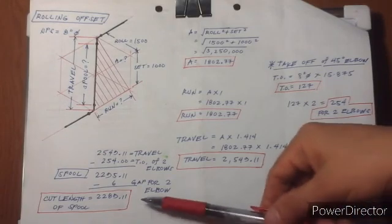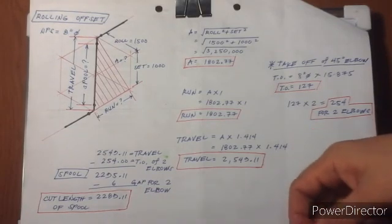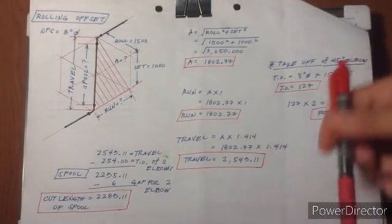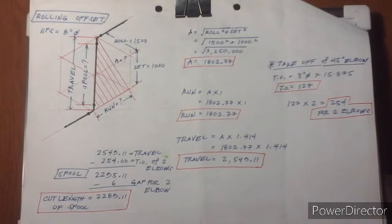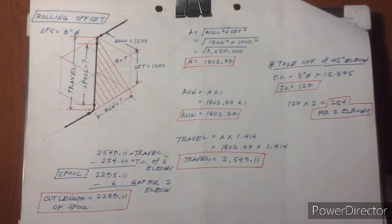This will be the cut length of the spool — from joint to joint. This has been our topic for the rolling offset and simple offset. I hope you learned and understood. Thank you guys for watching. Thank you very much.